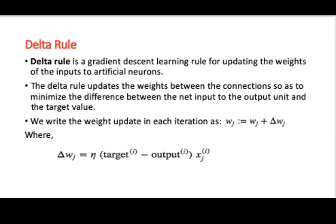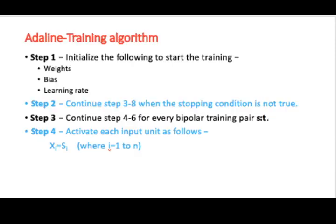So you can write it as Delta W_j equals (target^(i) - output^(i)) × x_j^(i). And the ADALINE neural network training algorithm works like this. In the first step, you initialize the weights, the bias and the learning rate for training.